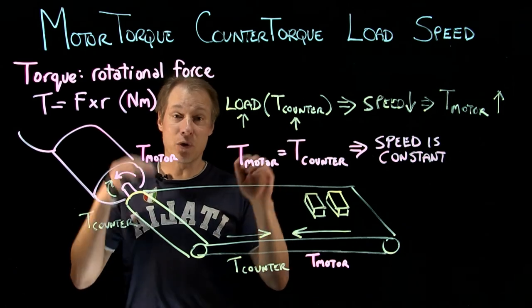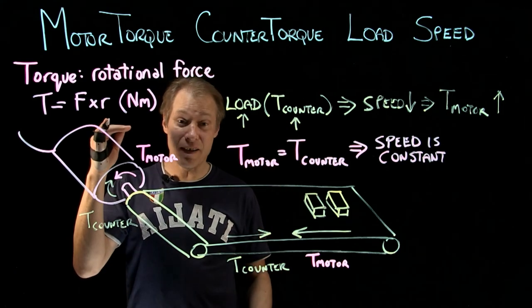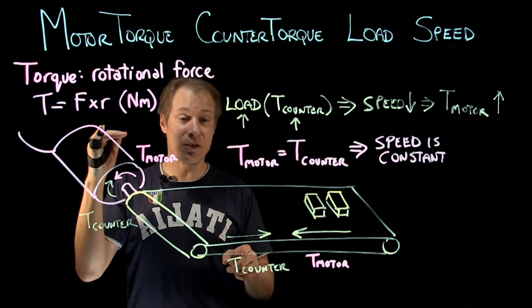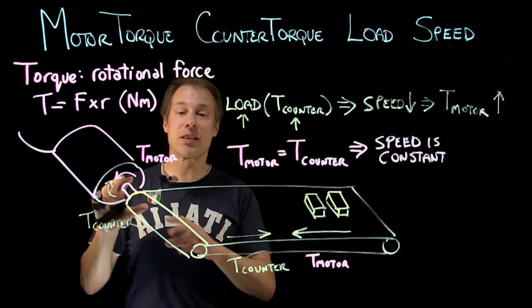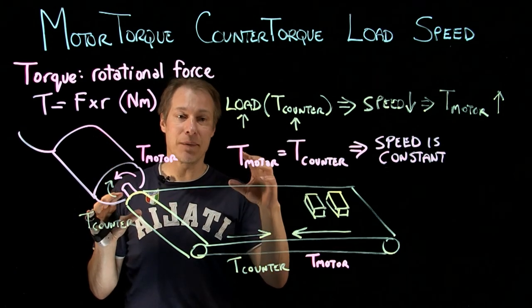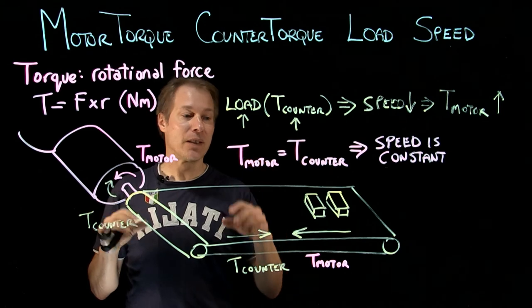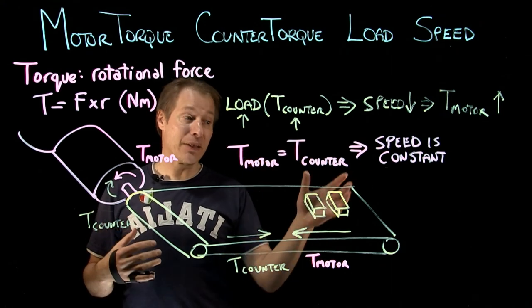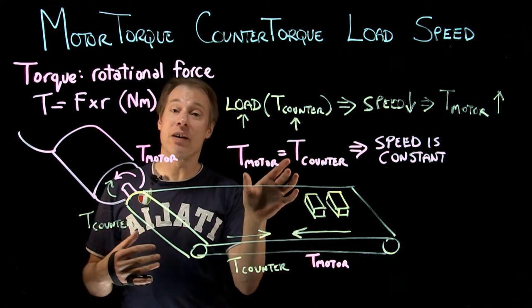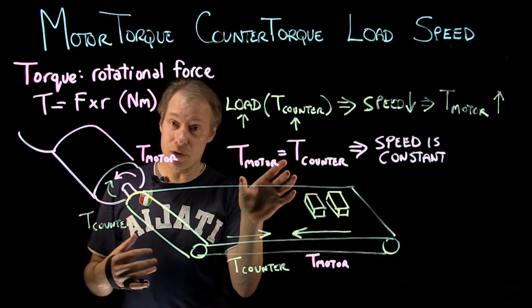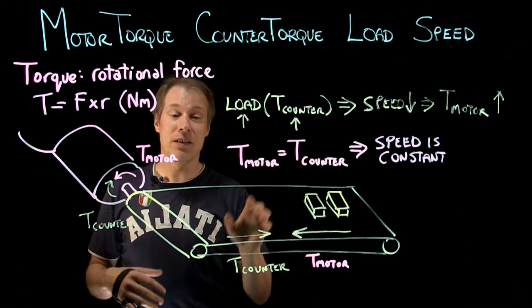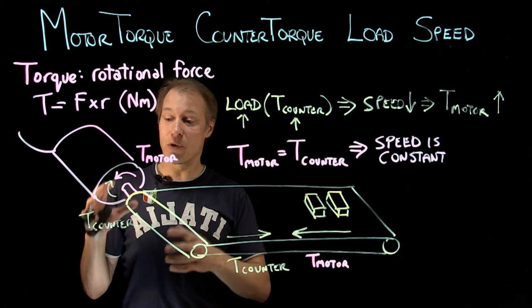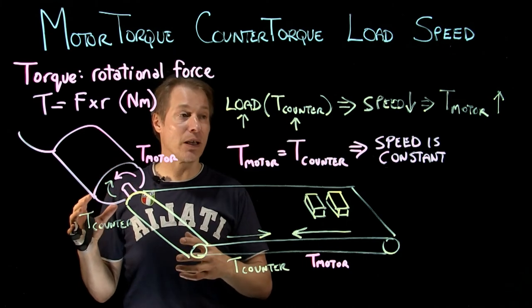If the motor torque is higher than the counter torque, the motor will speed up. If the counter torque is higher than the motor torque, then the motor will slow down. And as the speed changes, it also changes the torque of the motor.